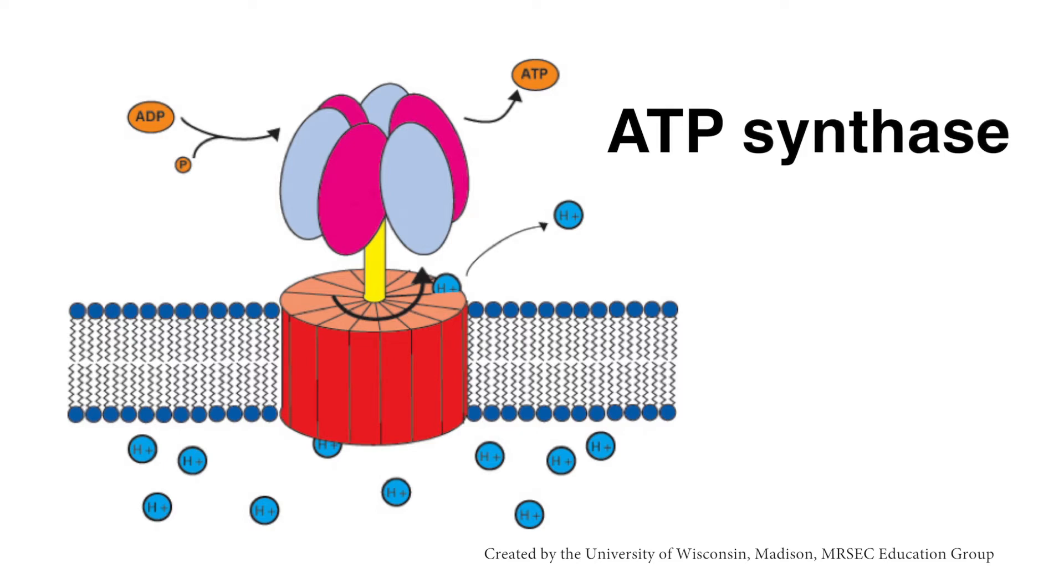As protons flow through the machine from the outer compartment into the inner compartment, like flowing water turning a water wheel, they provide a source of mechanical energy used to combine ADP and phosphate to make ATP.